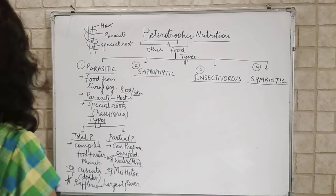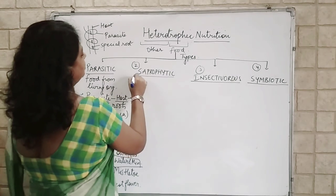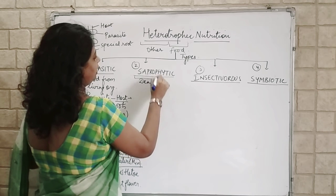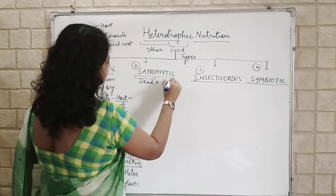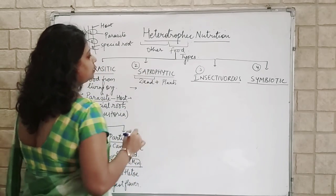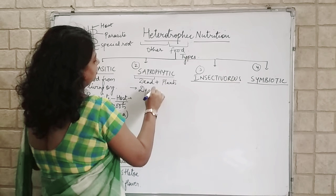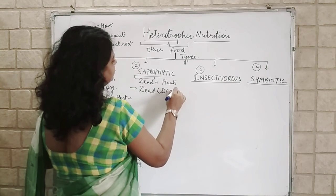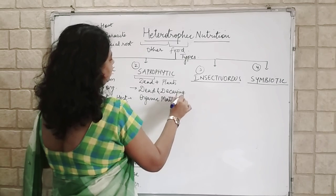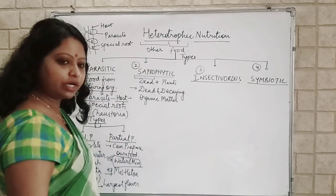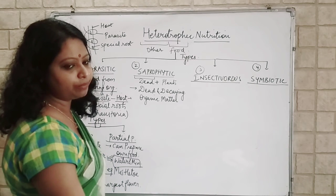We will move to the next type: Saprophytic. 'Sapro' means dead, decaying, rotten, and 'phytic' refers to plants. Saprophytic plants get their food from dead remains — dead and decaying plants and animals, that is, organic matter. They are not dependent on living organisms the way parasites are; they are dependent on dead remains. We call such plants saprophytes.